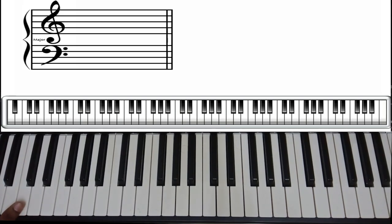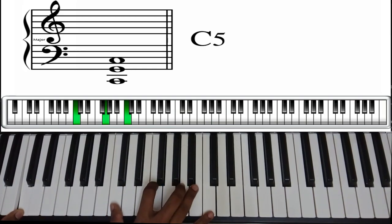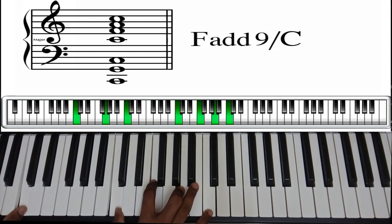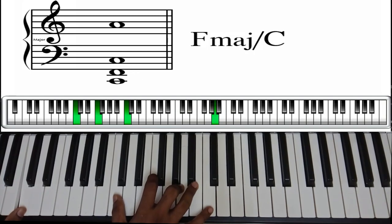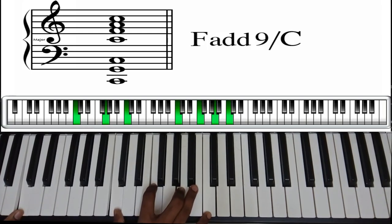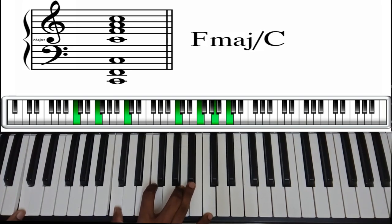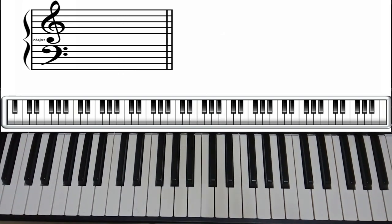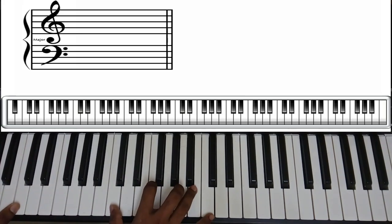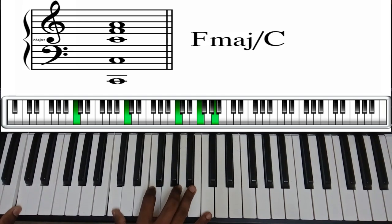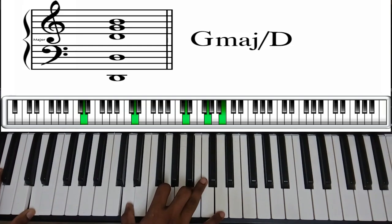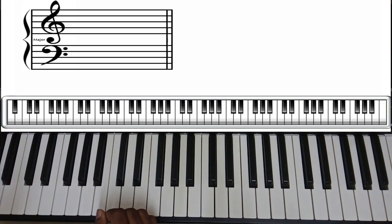If you have a different expression for chords, you can use a different expression. If you use C5, you can use C5 and F5. If you use F9, you can use F9 to press F5. If you use Fm, we can use Fm. If you use C, you can use Cm, Gm.